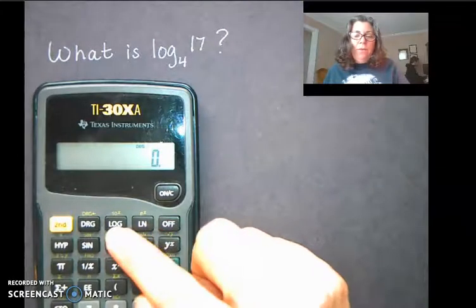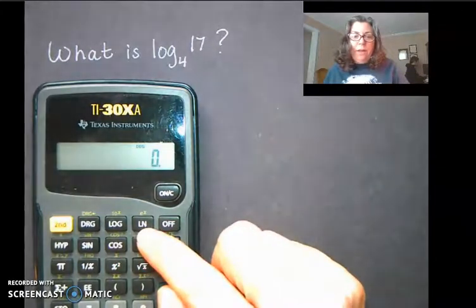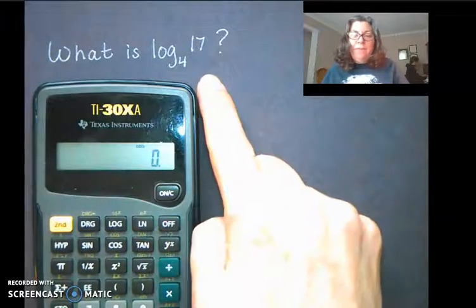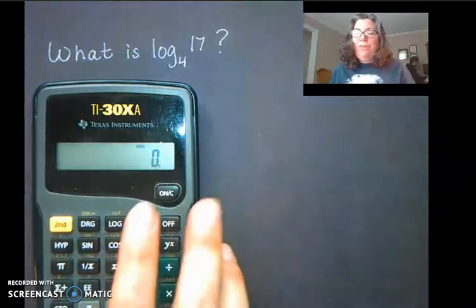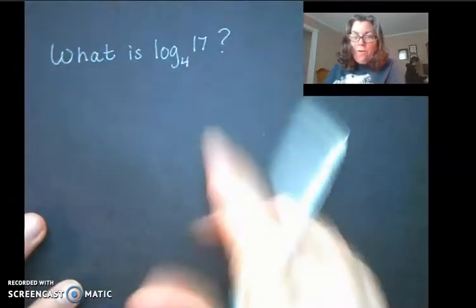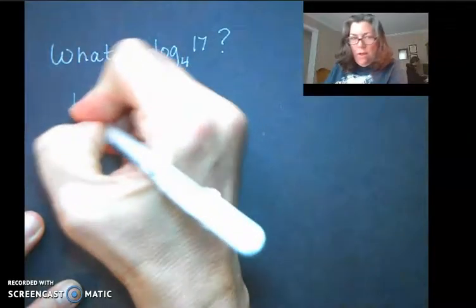So how in the world, if I don't have a graphing calculator, can I actually find this value? Well, mathematicians were pretty smart. Let me show you this formula they came up with. They start by writing 'I wish I knew what this was' and I'm just going to put N because I don't know.